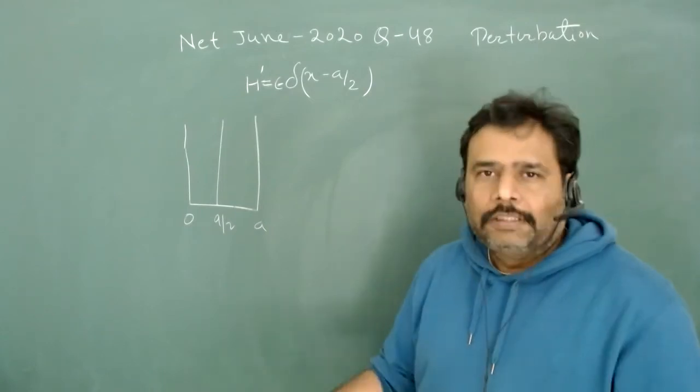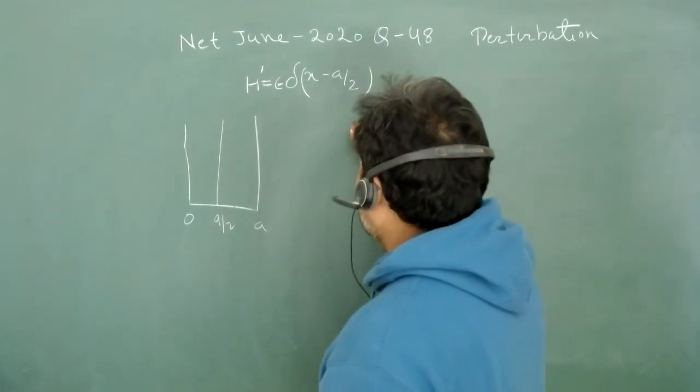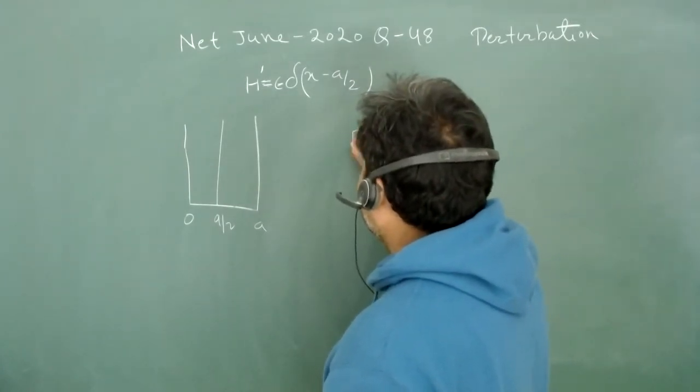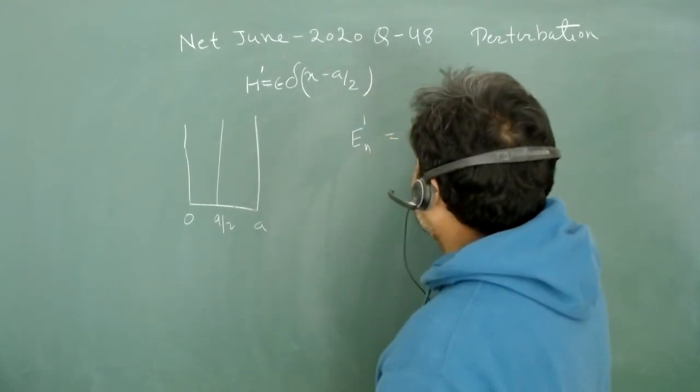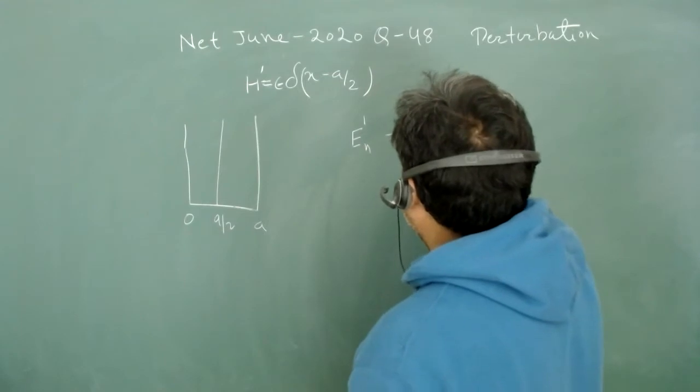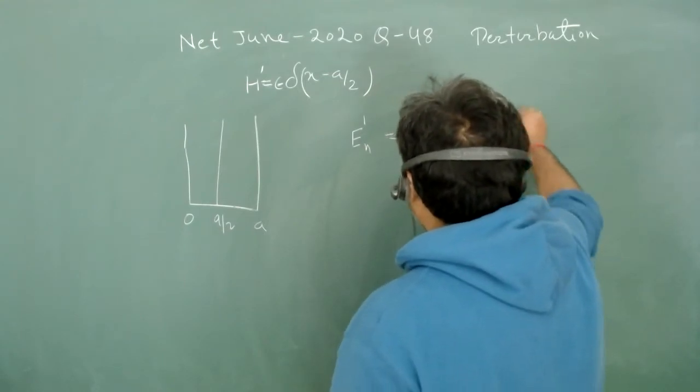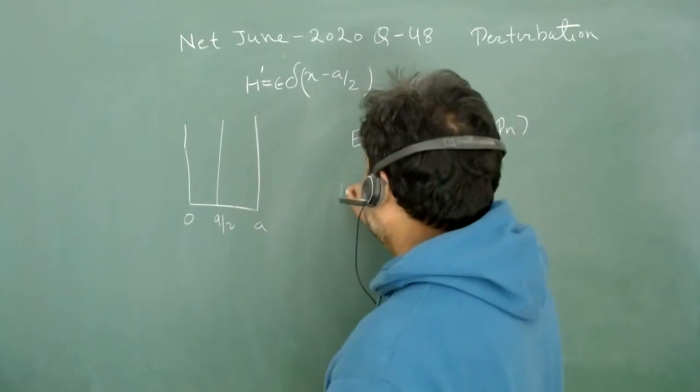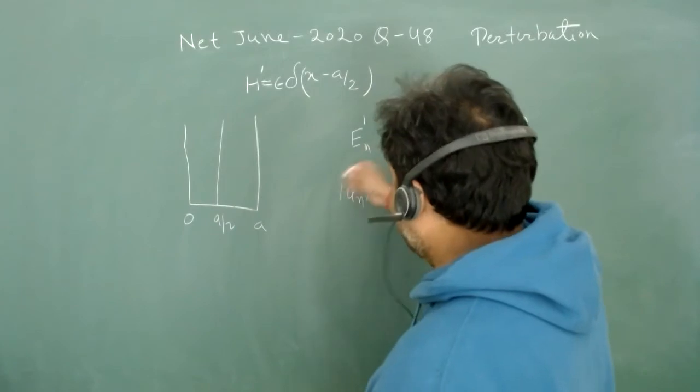Let's do it in a very general way. The correction term, En1, for the nth state is phi_n H' phi_n, where phi_n is the original eigenstate of the original Hamiltonian.